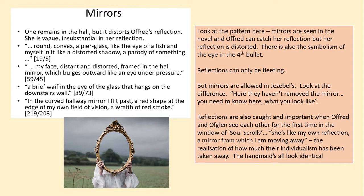There's also 'a brief waif' — a waif being traditionally like a ghost, a thin pale-looking figure. Then: 'in the eye of the glass that hangs on the downstairs wall.' And finally, in the curved hallway mirror: 'I flip past a red shape at the edge of my own field of vision, a wraith of red smoke.' A wraith does mean ghost — the ideas are similar. She can catch a reflection of herself, but they have to be fleeting. She's not allowed to be seen looking in the mirror. What she sees anyway is a distortion.